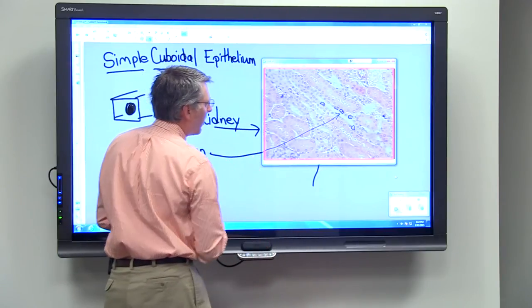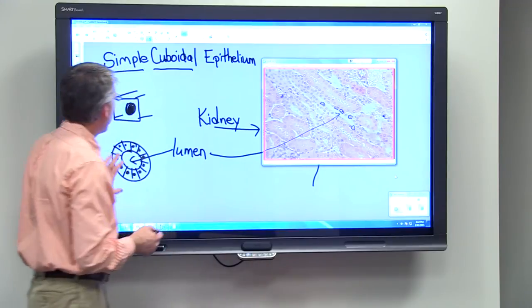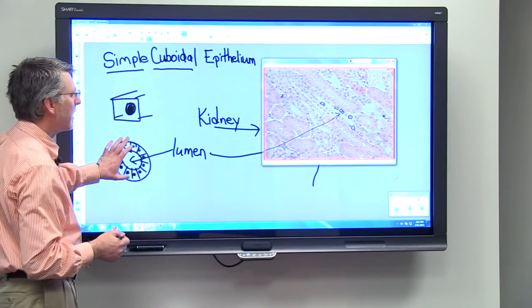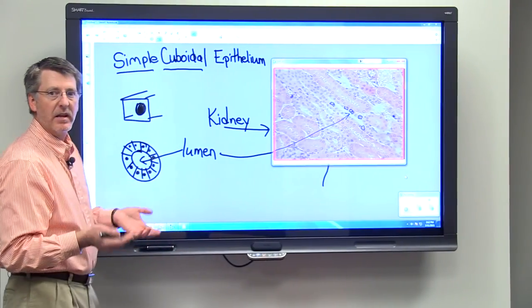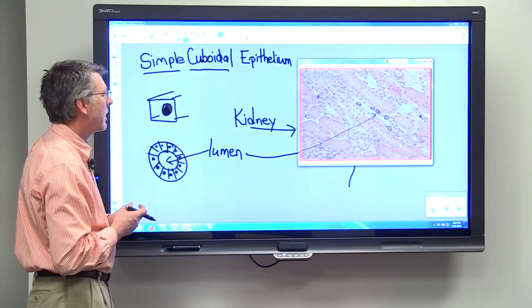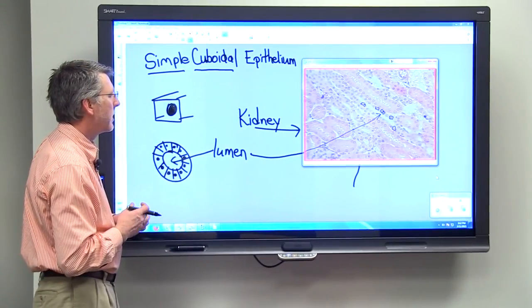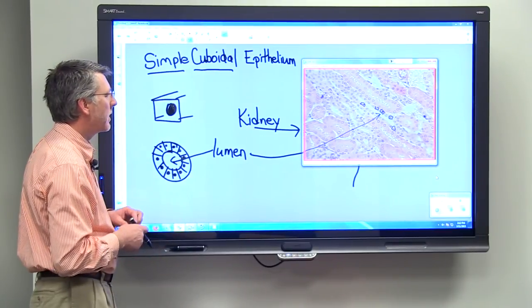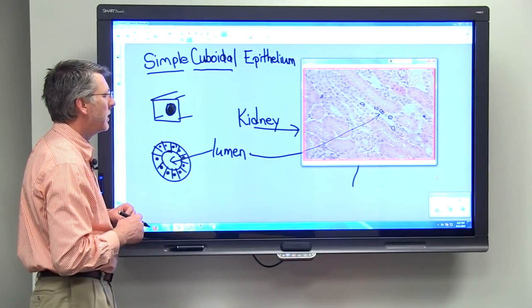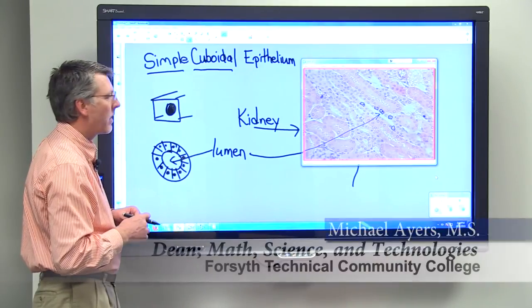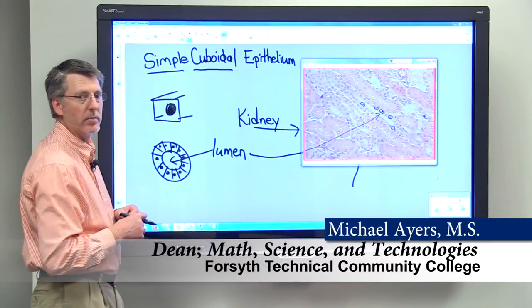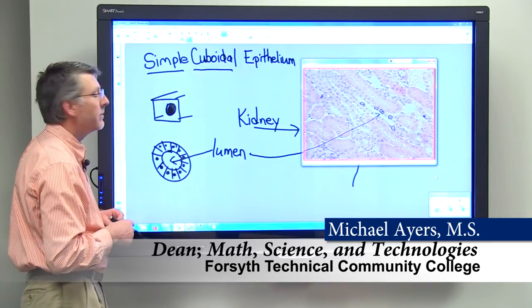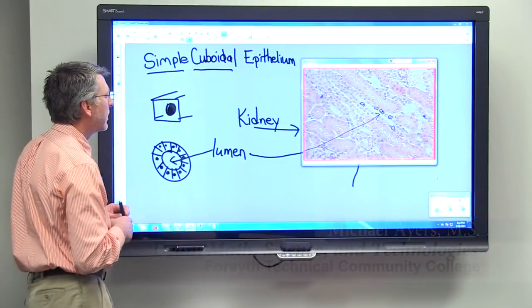So simple cuboidal epithelium is made up of cube-shaped cells. We find this tissue lining the ducts of glands and lining the tubules in the kidneys. A lot of exchange takes place in the kidneys of waste that are moving out of the blood and into what we call the filtrate. So that's simple cuboidal epithelium.